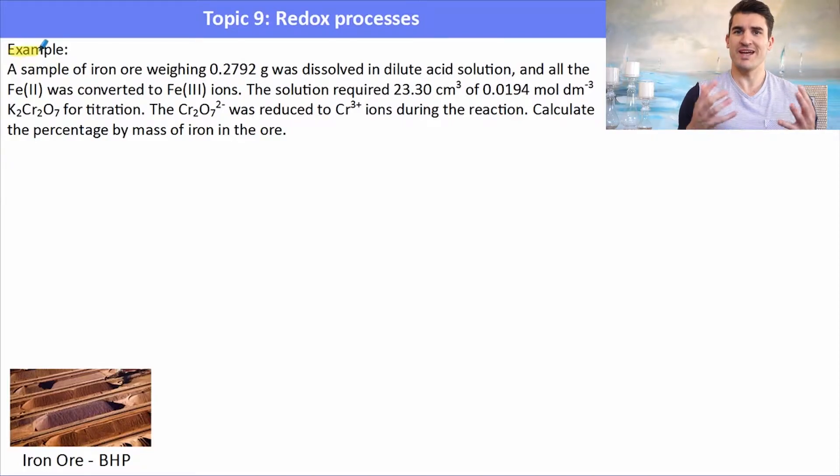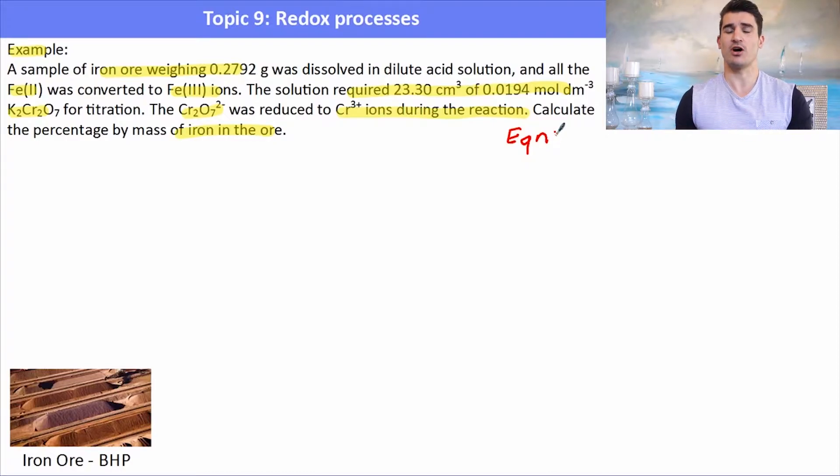So for a titration we undergo the exact same steps as we would in an acid-base reaction. The first thing we need to do is read the question carefully identifying all the key things. Here we've got Fe²⁺ converted into Fe³⁺, it required a certain amount of K2Cr2O7²⁻ potassium dichromate and they've told us what it's been converted into.